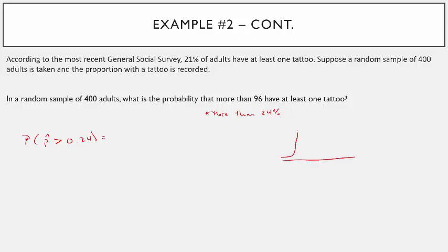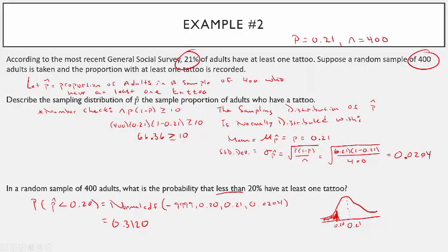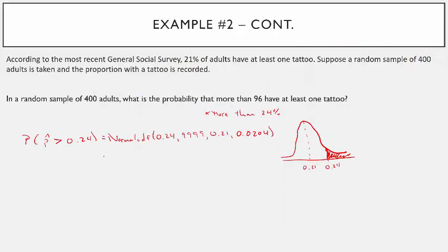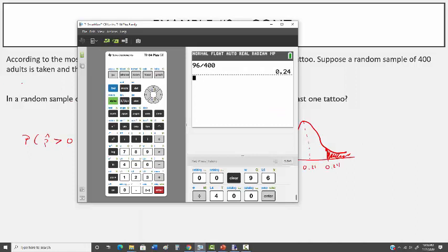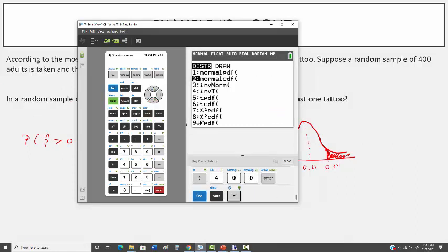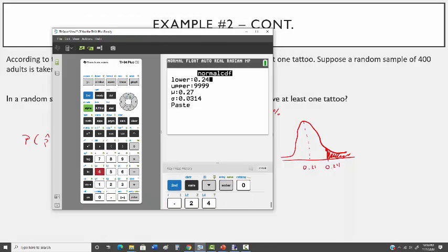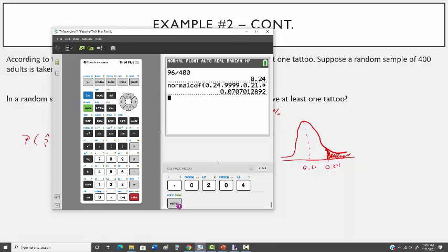Draw the curve if needed — it's centered at 0.21, and we want greater than 0.24, so this is a right-tailed problem. Using normal CDF: lower is 0.24, upper is 9999, mean is 0.21, standard deviation is 0.0204. On the TI-84: 2nd function, distribution, normal CDF, enter 0.24, 9999, 0.21, 0.0204. You should get 0.0707.